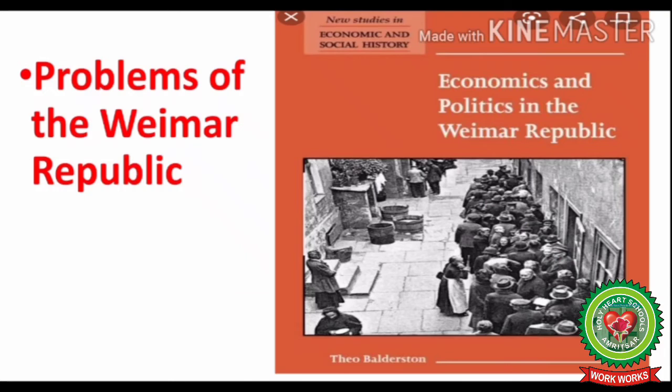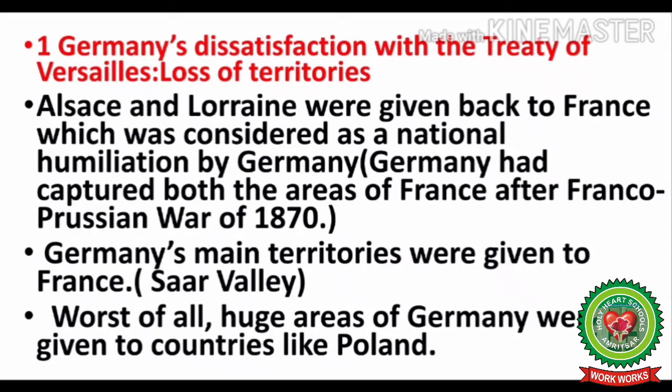Many historians had described the Weimar Republic as the most democratic document of the modern era. Yet there were many problems it had to face. Let us discuss the economic, political, and social problems the Weimar Republic faced when it was set up in Germany in 1920. The first big problem was Germany's dissatisfaction with the Treaty of Versailles and the loss of its territories.